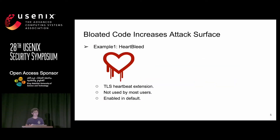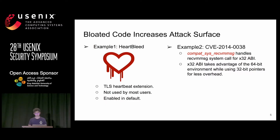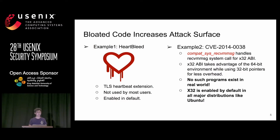In the context of security, bloated code increases attack surface. Take Heartbleed as the first example: the vulnerability is in the TLS Heartbleed extension in OpenSSL, and this extension is not used by most users but is enabled by default. The second example is CVE-2014-0038. This vulnerability is in the compat_sys_recvmmsg function, which handles the recvmmsg system call for the X32 API — an API that uses 64-bit environments with 32-bit pointers for less overhead. However, no real-world use case exists, yet X32 API is enabled by default in all major distributions like Ubuntu.